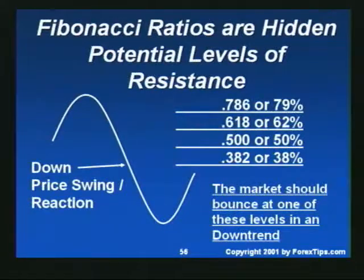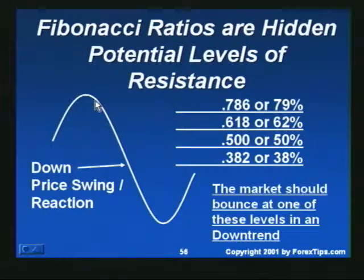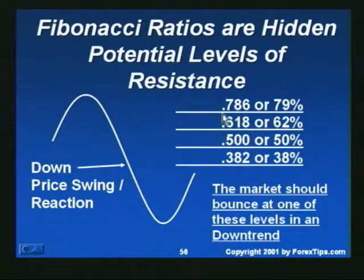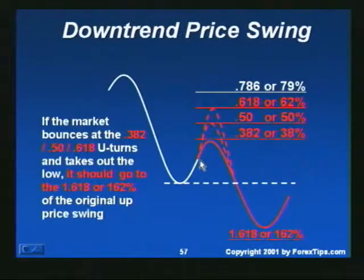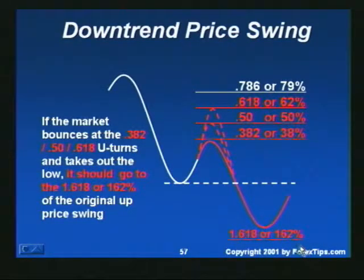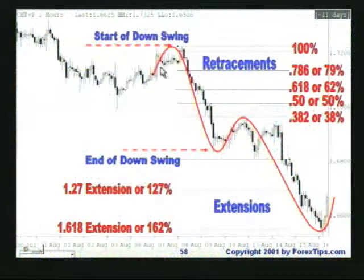Fibonacci levels in a downswing become hidden levels of potential resistance. In a downswing everything is turned upside down: the swing starts at a high and stops at a low. As the market retraces, it first meets the 0.382, then the 0.50, then the 0.618, then the 0.786. If the market bounces at the 0.382, 0.50, or 0.618 and turns to take out the previous low, it should go to the 1.618 (162%) extension. One example shows a bounce to the 0.382 going straight to the 1.618 extension, from which it should continue toward further extension territory.